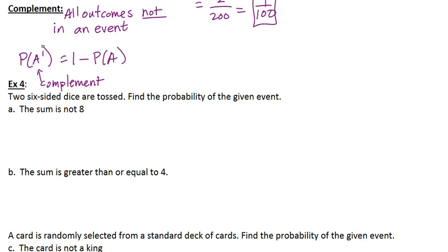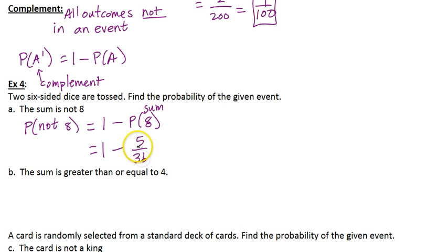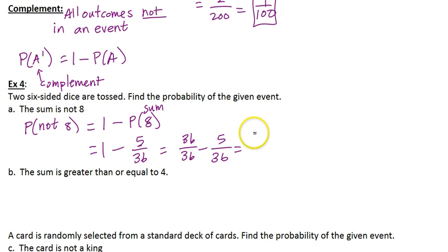Example 4: two six-sided dice are tossed. Find the probability of the given event. Part A: I want the sum not 8. So I find 1 minus the probability of a sum of 8. I subtract from 1 because that represents 100% — probabilities never exceed 100% for an event. Going through the dice chart, how many outcomes have a sum of 8? There are 5 of them. That was much faster than counting how many weren't 8. So 1 minus 5 over 36 — think of 1 as 36 over 36 — gives 31 over 36 as my final answer.